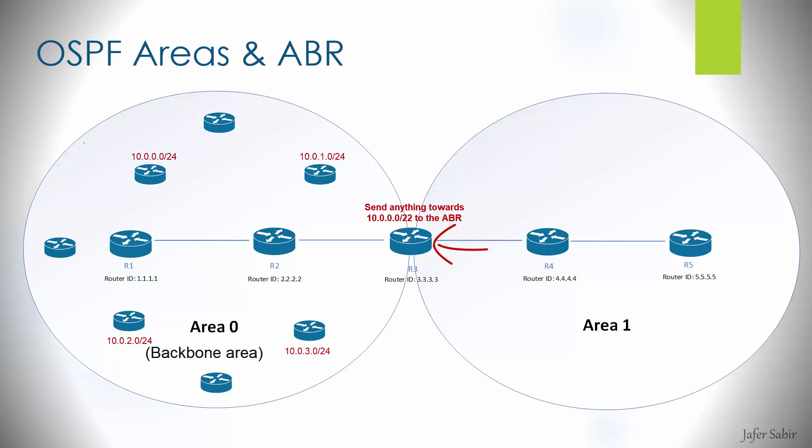This also leads into special area types: stub areas, totally stubby areas, and not-so-stubby areas, which are covered in another video. An important point about the ABR is that it should be a stable, healthy router — you don't want an old, sluggish router acting as ABR, as it needs to track multiple areas and their changes. Make sure the ABR has no performance issues. Also, for summarization to work, your networks need to be contiguous — don't mix discontinuous IP subnets, as you won't be able to summarize them. Best practice is to keep networks organized hierarchically.